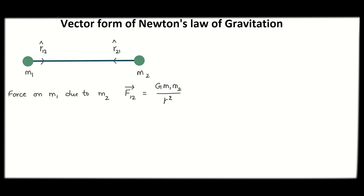m1 and m2 exert forces on each other. What is the direction? m2 attracts m1 towards it — that means the force on m1 is directed towards m2. Towards m2 represents a position vector and unit vector. The unit vector in that direction is r12 cap.